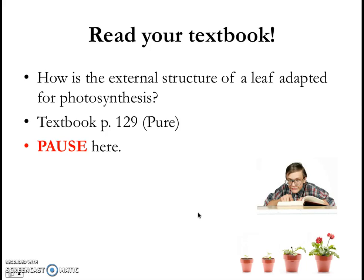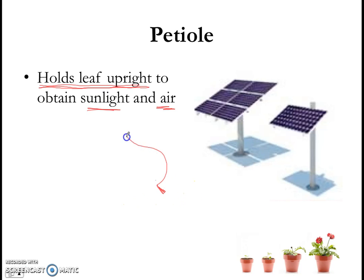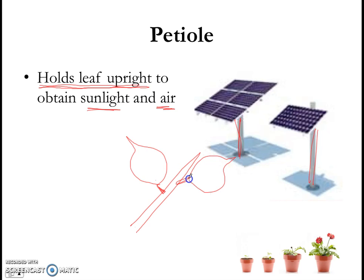Hope that you're done with reading. We're going to move on and discuss our reading together. So we start with the petiole, or the leaf stalk. Its main function is to hold the leaf upright, which helps it to obtain sunlight and air. Without the petiole, the leaves will not be able to be propped up nicely. It is a bit like solar panels — these solar panels need to be propped upright so that they are able to receive sunlight. In the same way, leaves need to be propped up by the petiole so that they are able to receive sunlight and obtain air, which are both needed for photosynthesis.